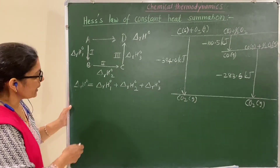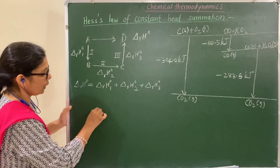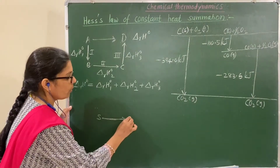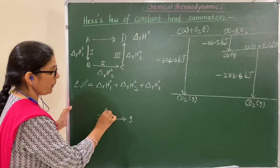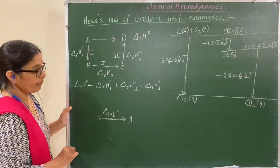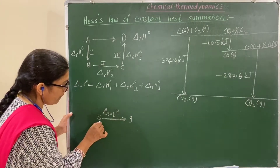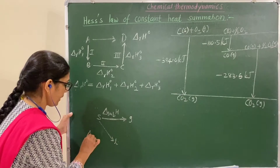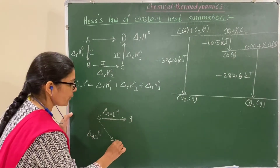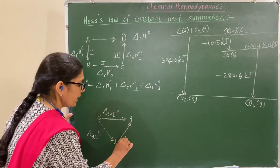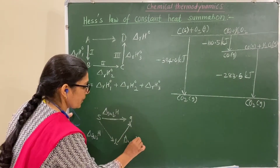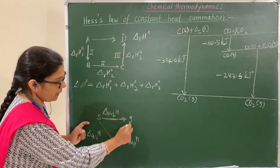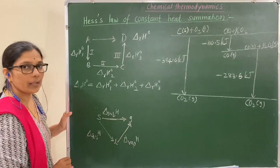Here is one more example: solid converted into gaseous state — that is the enthalpy of sublimation — carried out in one step. Alternatively, solid is first converted into liquid, where the enthalpy change is the enthalpy of fusion, and then liquid is converted into gaseous state, which is the enthalpy of vaporization. The sum of enthalpy of fusion plus enthalpy of vaporization equals the enthalpy of sublimation — two steps giving the same result.